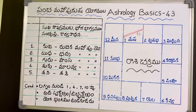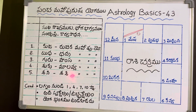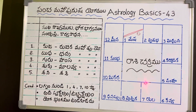That means, in our Jataka Chakra, there is a condition. The first condition is positions 1, 4, 7, 10 in this Jataka Chakra.